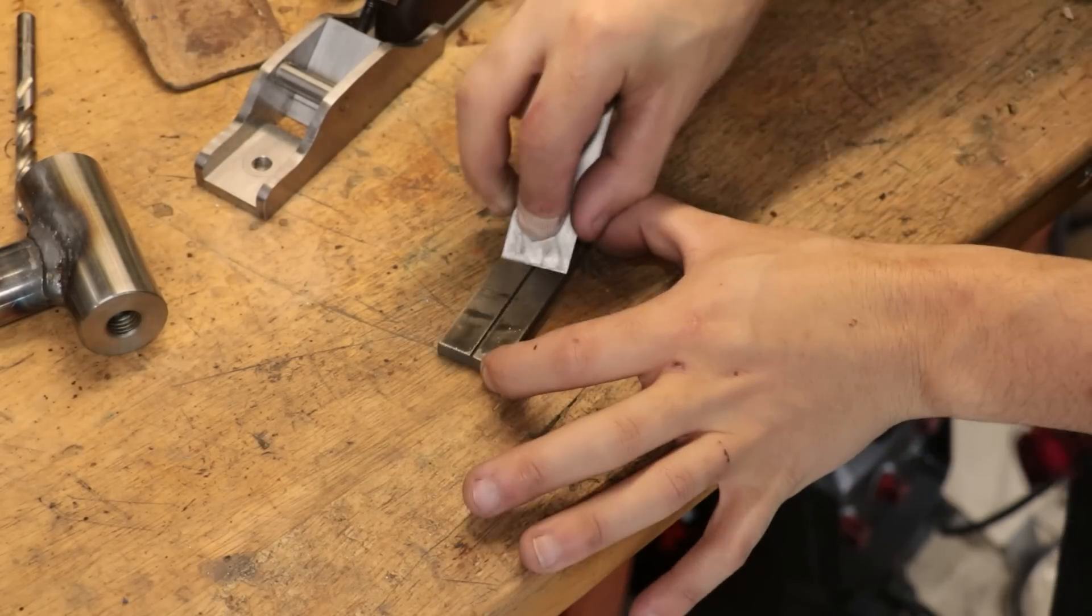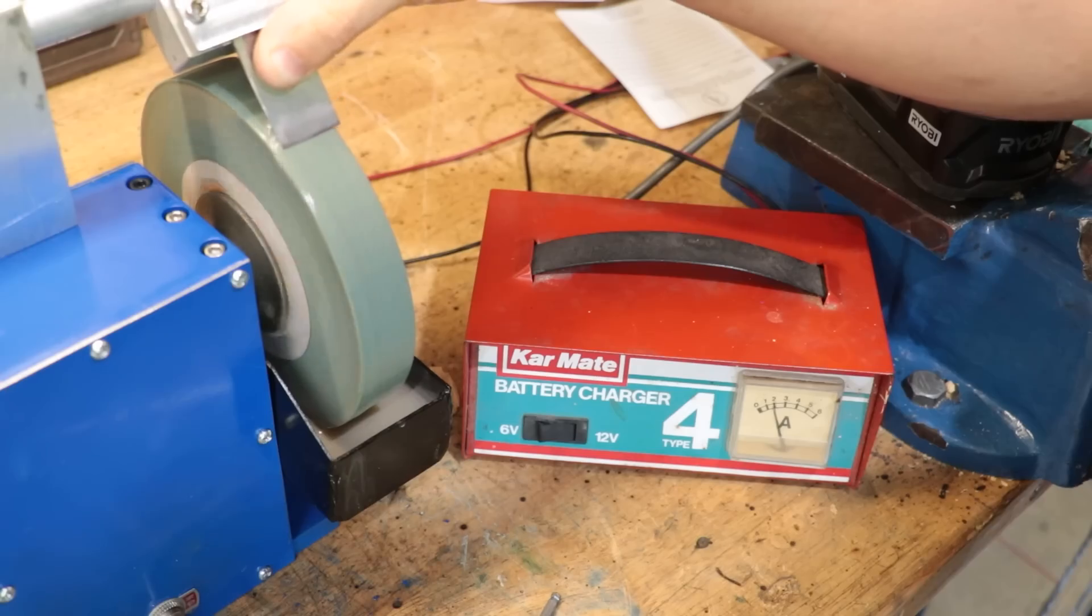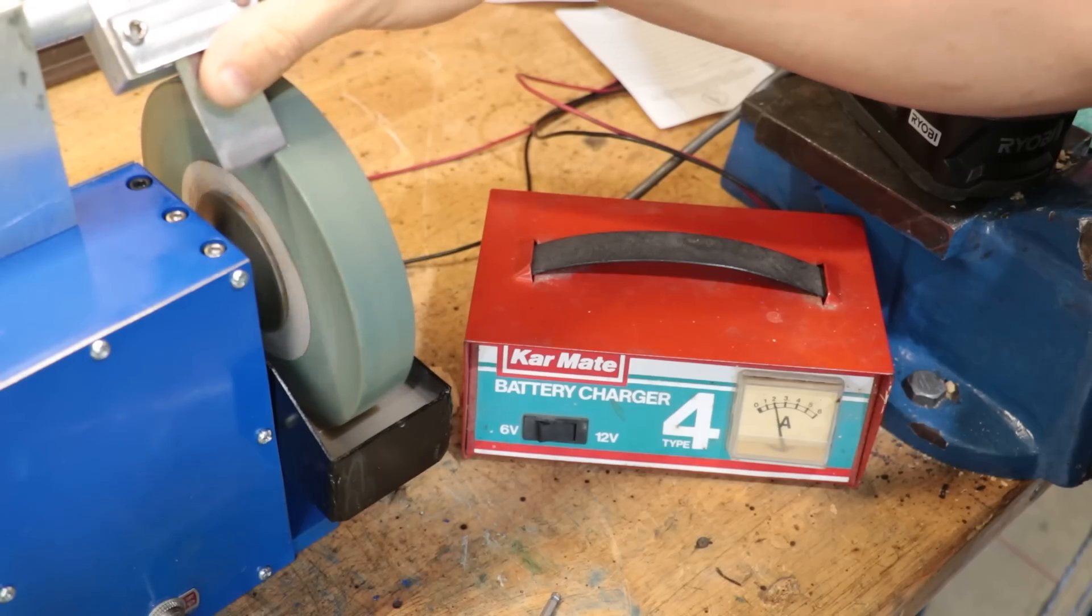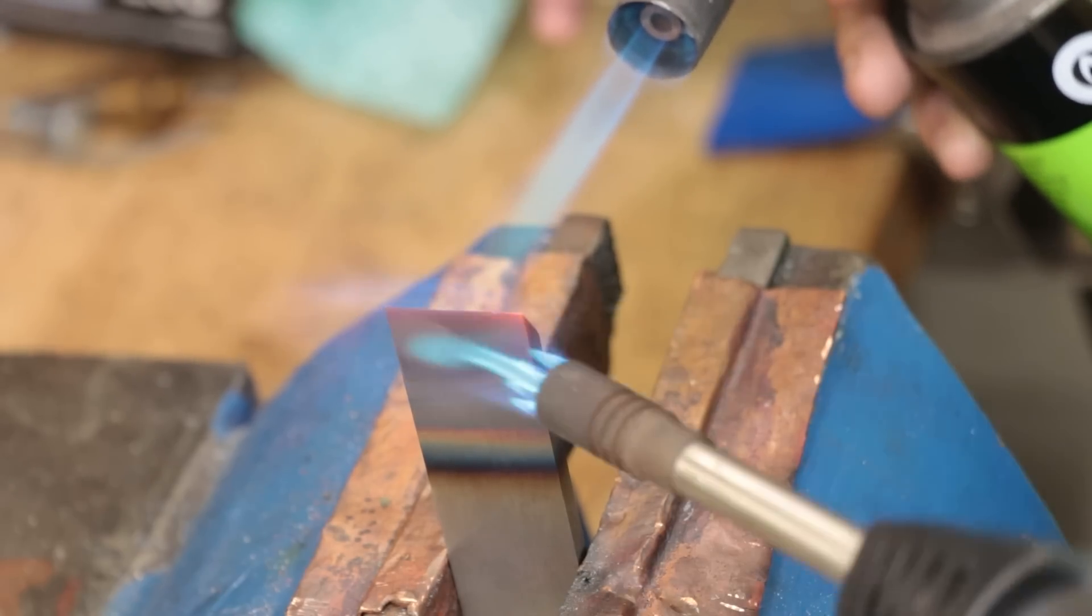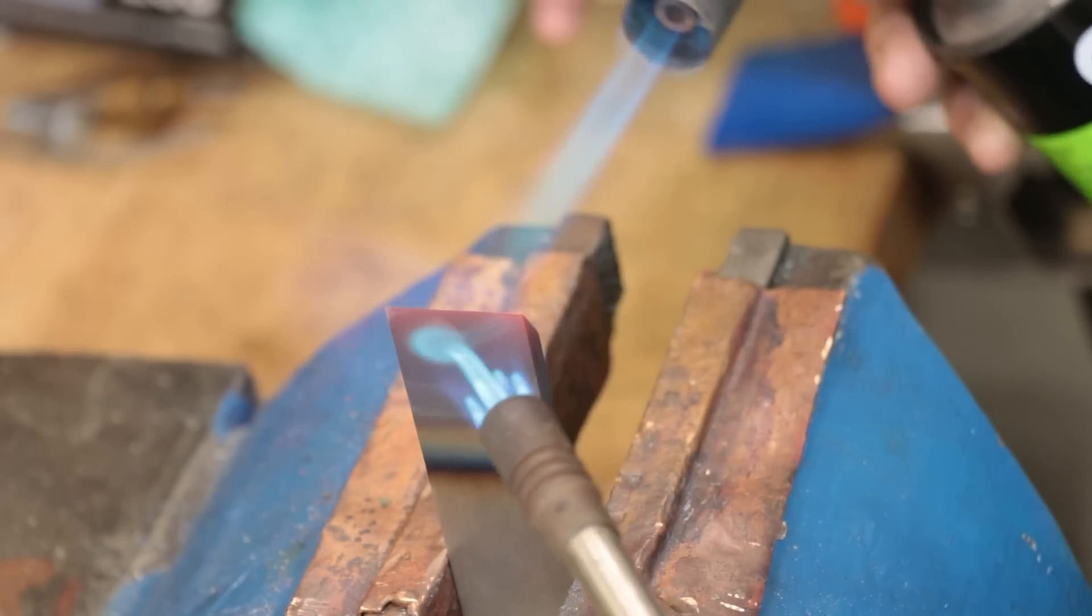Which for the blade meant using a combination of diamond stones and the wet sander which I also made earlier this year. The blade's only made from carbon steel so it needs to stay cool whilst I'm sharpening it otherwise it will lose its hardness.